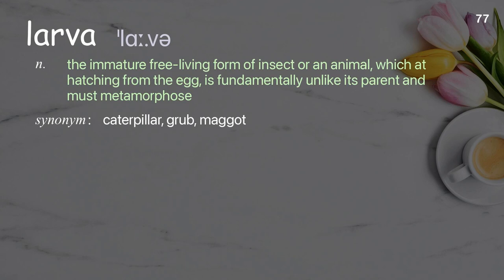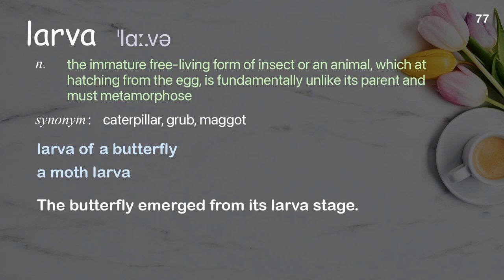Larva: the immature free-living form of an insect or animal, which having hatched from the egg, is fundamentally unlike its parent and must metamorphose. Examples: larva of a butterfly, a moth larva. The butterfly emerged from its larva stage.